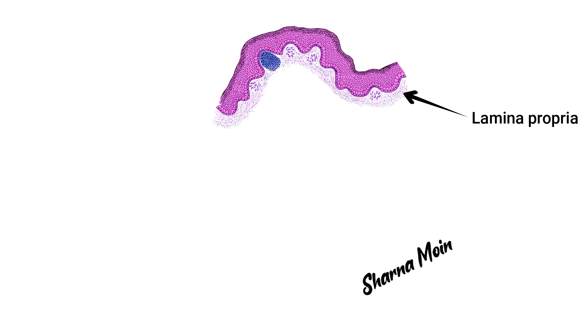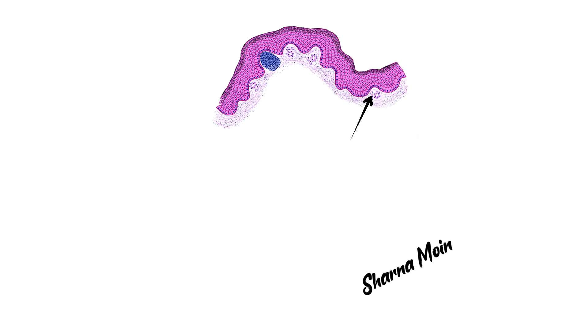Then we have the lamina propria. It is a connective tissue layer. You can see these blue dots — they are the nuclei of the connective tissue cells. As this is a connective tissue layer, it has connective tissue cells, connective tissue fibers, and you can also see many blood vessels: the arterioles, the venules, and I can also see a lymphatic nodule here.